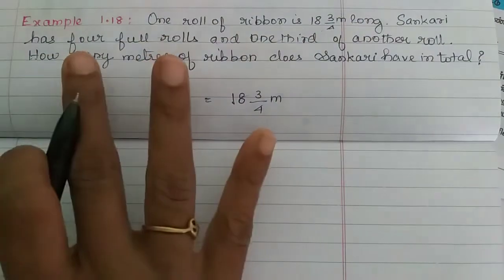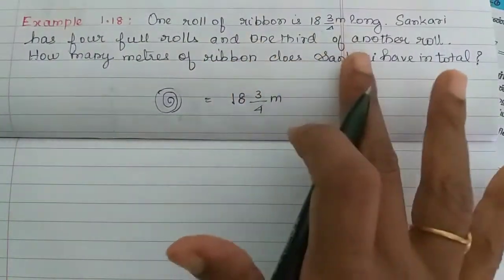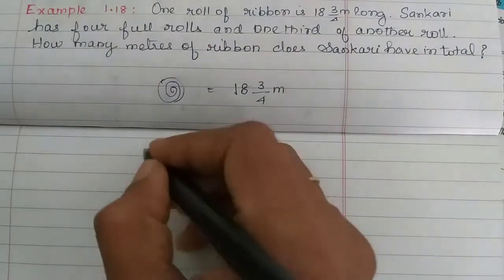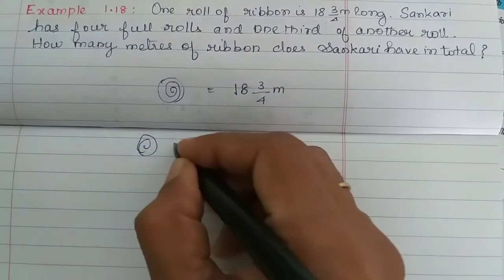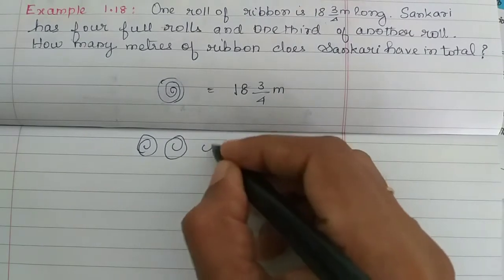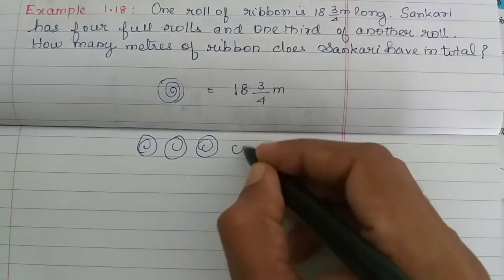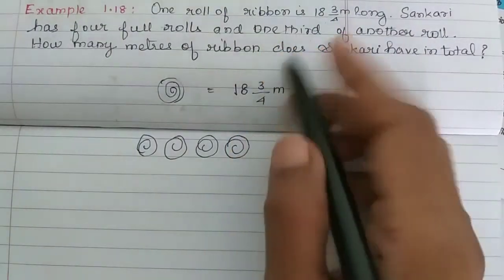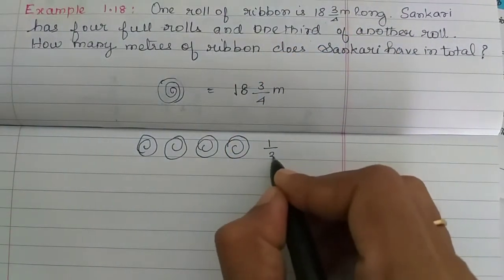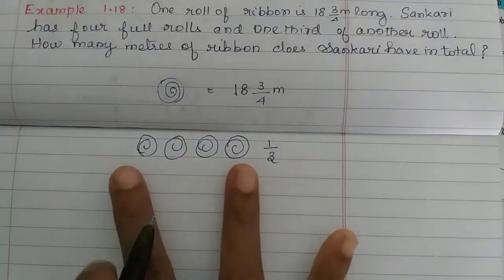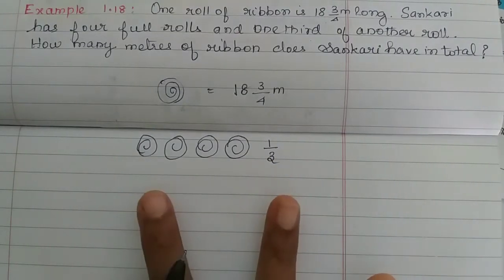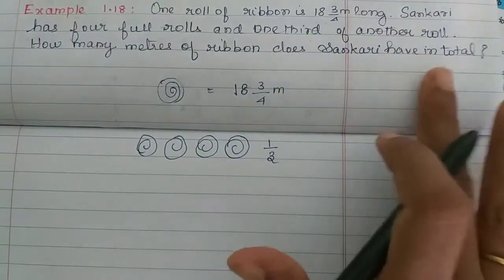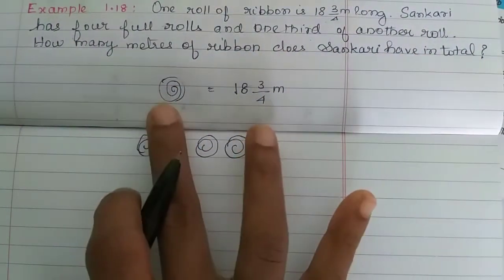Sankari has 4 full rolls and 1 third of another roll. Sankari has how many rolls of ribbon? How many meters of ribbon does Sankari have in total? There are 4 rolls of ribbon. There are 4 rolls of ribbon, and one third. How many rolls of ribbon does Sankari have in total? There are 4 rolls. If you look at one roll.